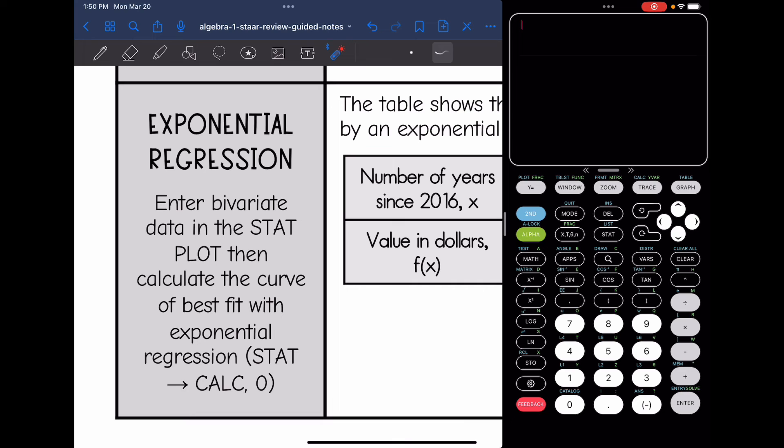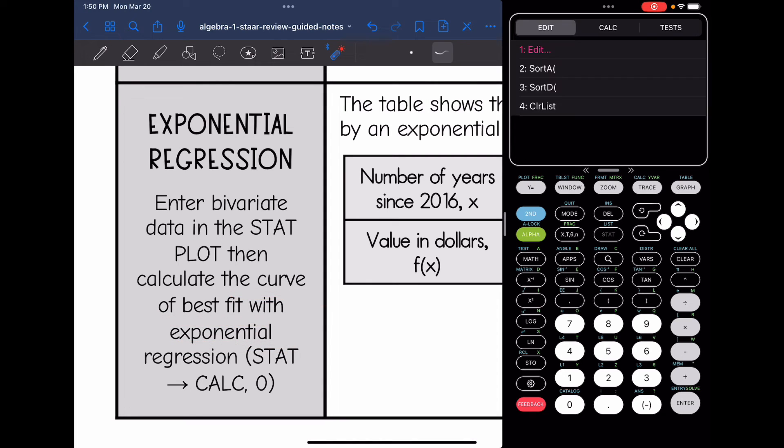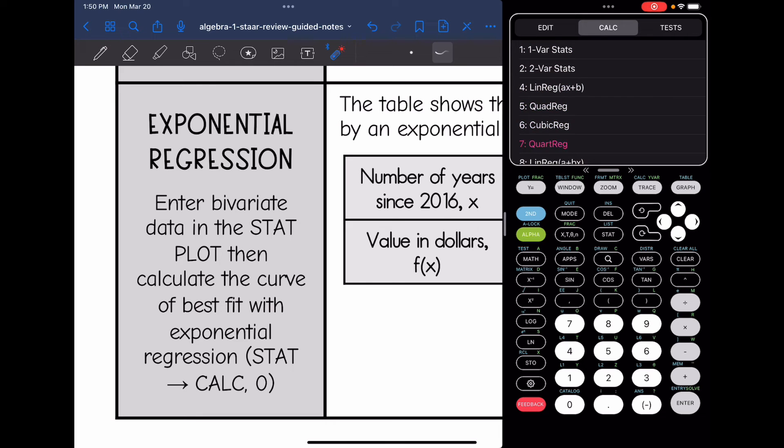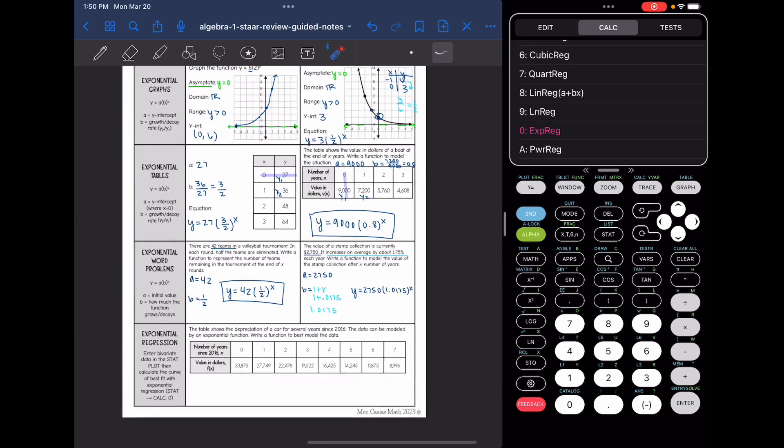All right, our last section is over exponential regression, which I like to use the TI calculator for. So I pulled that up. We can enter x and y data into the stat plot by hitting stat enter. And then if I want to get the exponential curve of best fit, then I do stat, arrow over to calc, and then we go all the way down to zero for exponential regression.